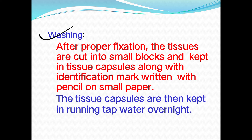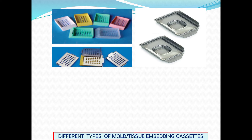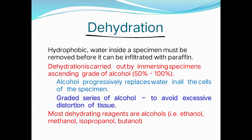After proper fixation, tissue is cut into small blocks and placed in tissue cassettes along with identification marks written in pencil on small paper. The tissue cassettes are then kept in running tap water overnight. Different types of molds and tissue embedding cassettes include plastic and metallic types; disposable base molds are also available.